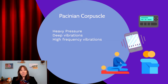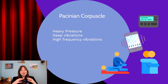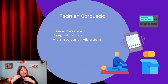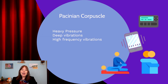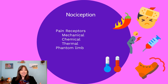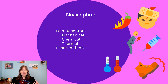Finally, the Pacinian corpuscle is located deep in the skin and is sensitive to heavy pressure, deep vibrations, and high frequency vibrations. These fire during massages, tight hugs, or even a vibrating cell phone in your pocket. Together, these four types of neurons give us the sensation of contact with our skin, but our sense of touch is much more than just contact — it also includes pain receptors.